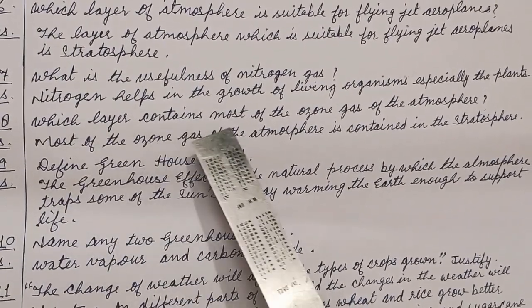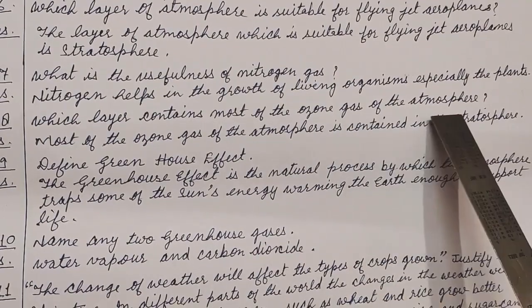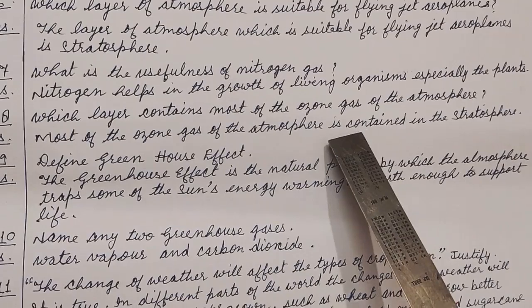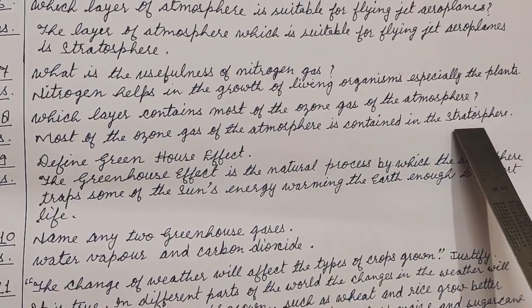Question number 8. Which layer contains most of the ozone gas of the atmosphere? Answer. Most of the ozone gas of the atmosphere is contained in the stratosphere.